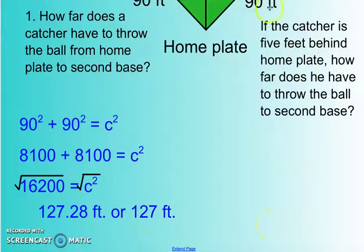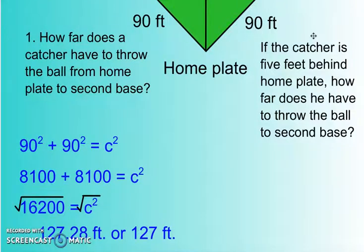Now look at the next question. It says, if the catcher is 5 feet behind home plate. Because remember, a catcher usually doesn't stand on home plate. Sometimes they do, but when a batter is up to bat, they stand behind the batter, so they're about 5 feet back. How far does he or she have to throw the ball to second base?